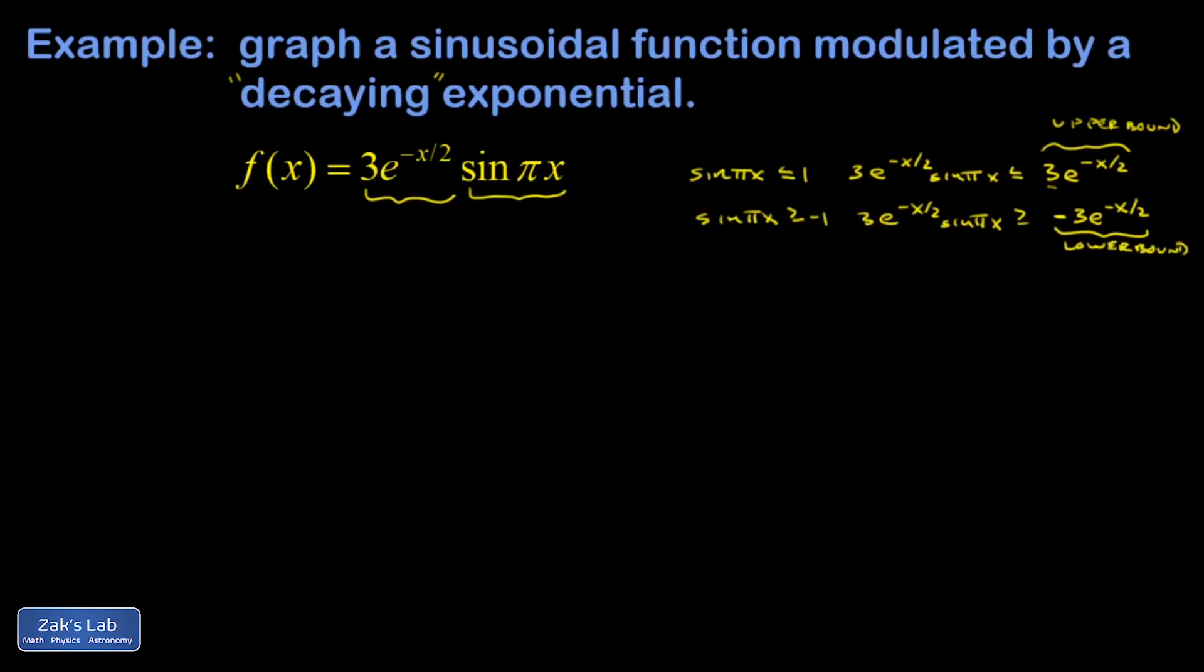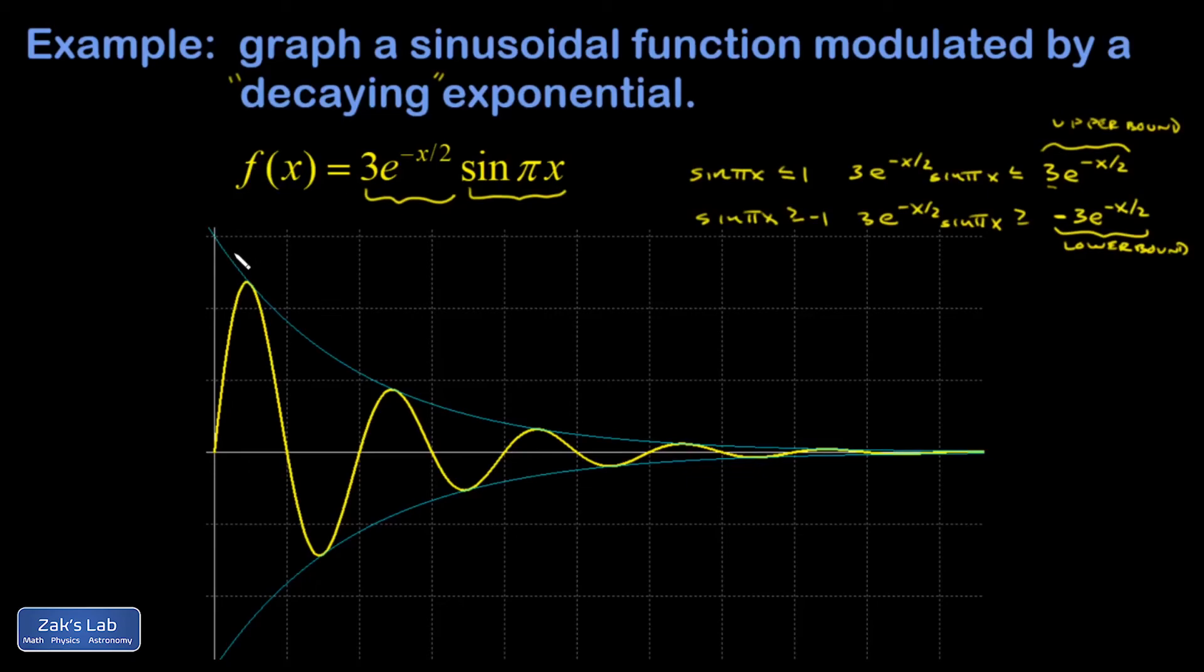And so what I get is a wiggle that's being squished to 0 as I go to the right. So let's pop a graph of this into the slide. Okay, so here's my upper bound. This is the graph of 3e to the negative x over 2. Here's my lower bound. That's the graph of negative 3e to the negative x over 2. And then trapped in between the upper and lower bound is my function f of x.